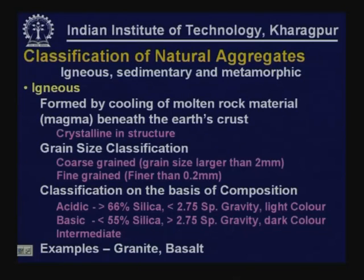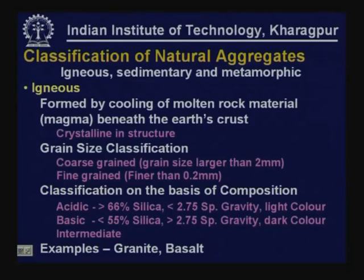Based on their natural geological formations, rocks are classified into igneous, sedimentary, and metamorphic. Igneous rocks are formed by cooling of molten rock material, also called magma, which is beneath the earth's crust. These are usually crystalline in structure.